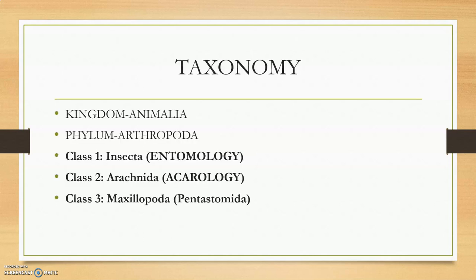Moving to the taxonomy, all arthropods belong to kingdom Animalia and phylum Arthropoda. Under the phylum Arthropoda we have the first class — class Insecta, where all the insects will be placed. The next class is class Arachnida.